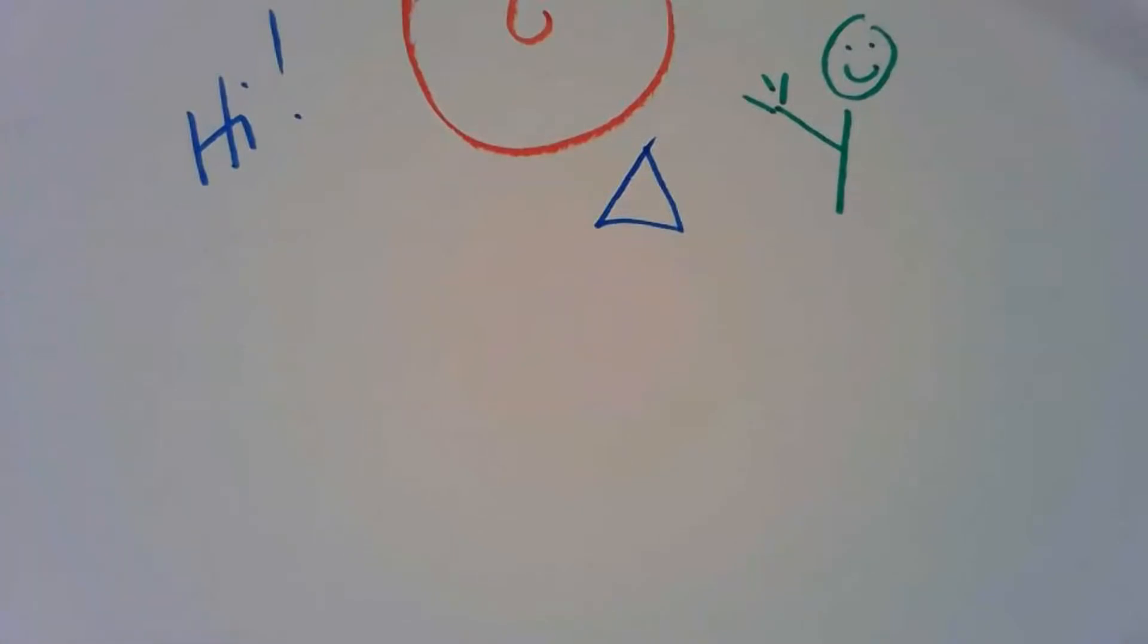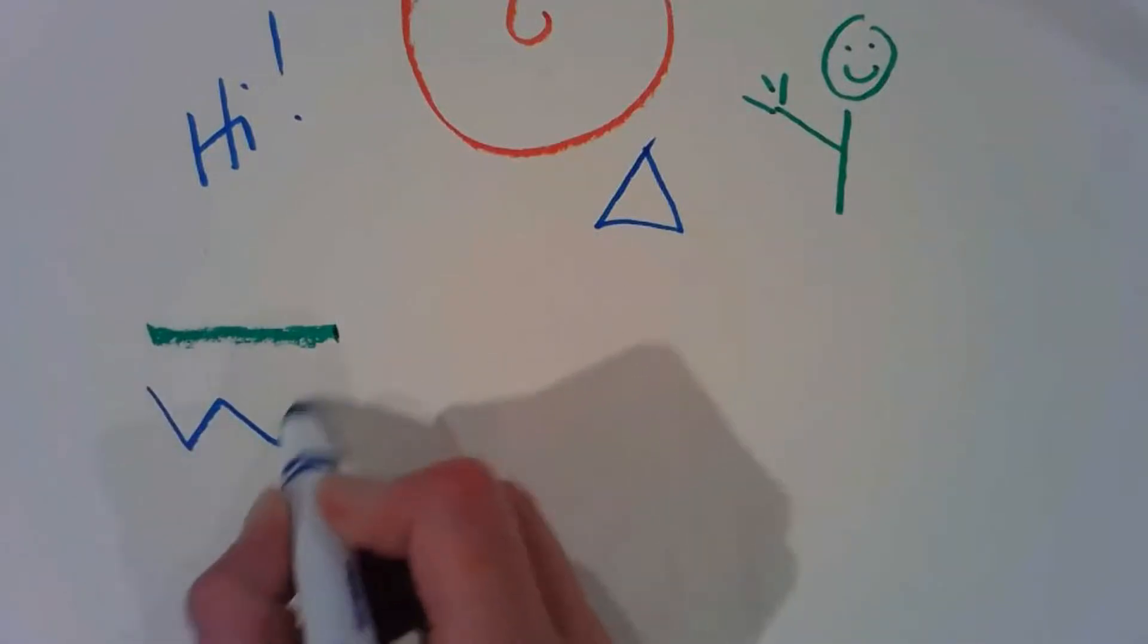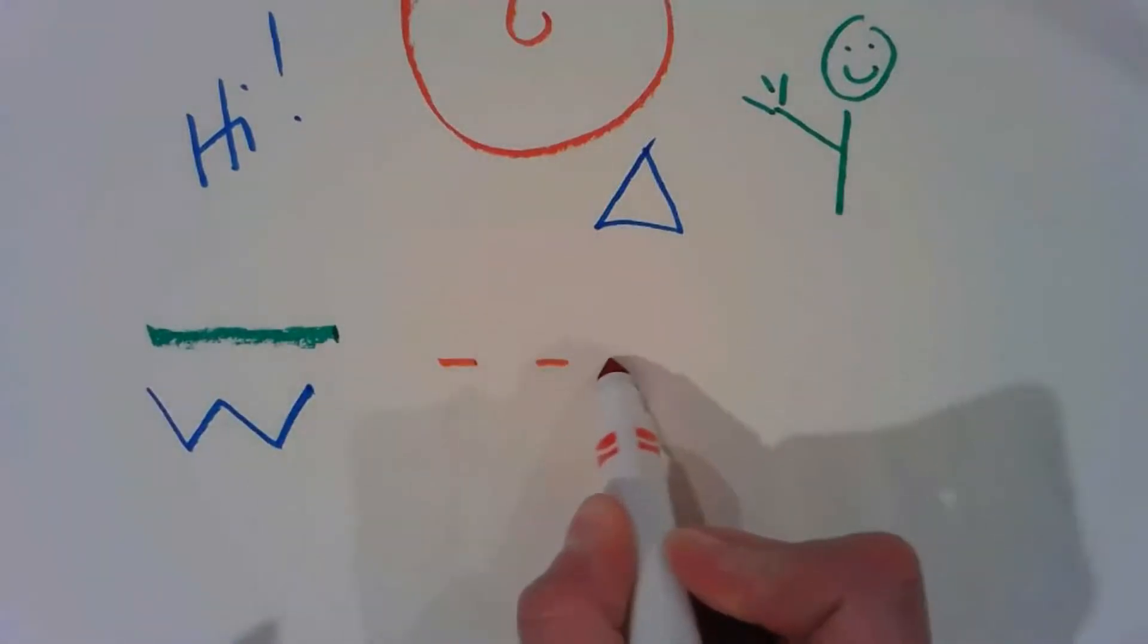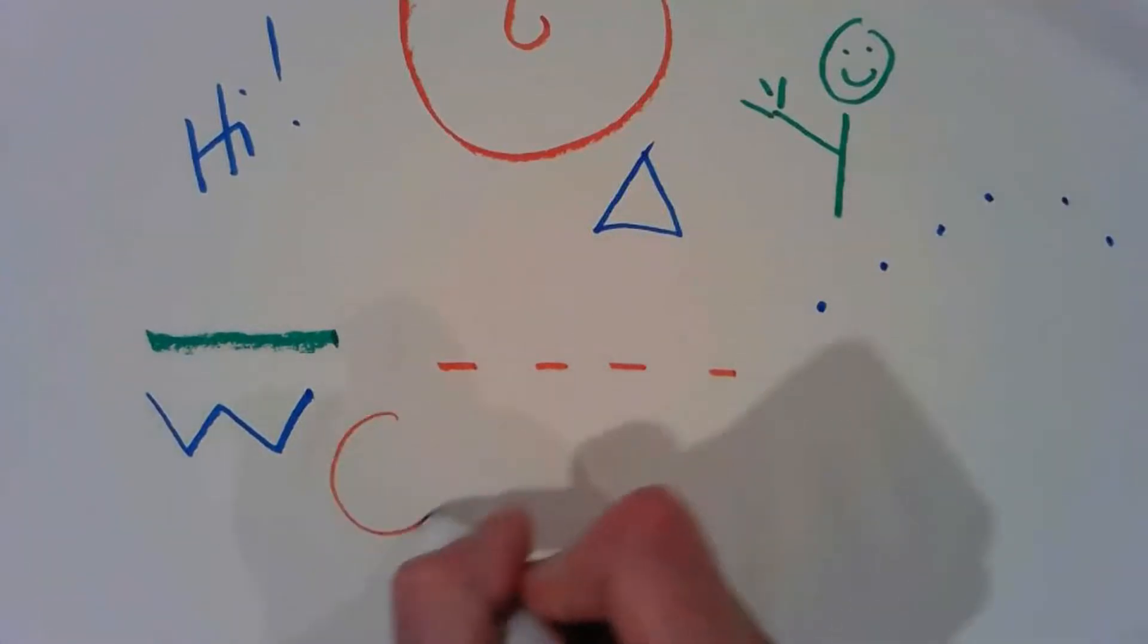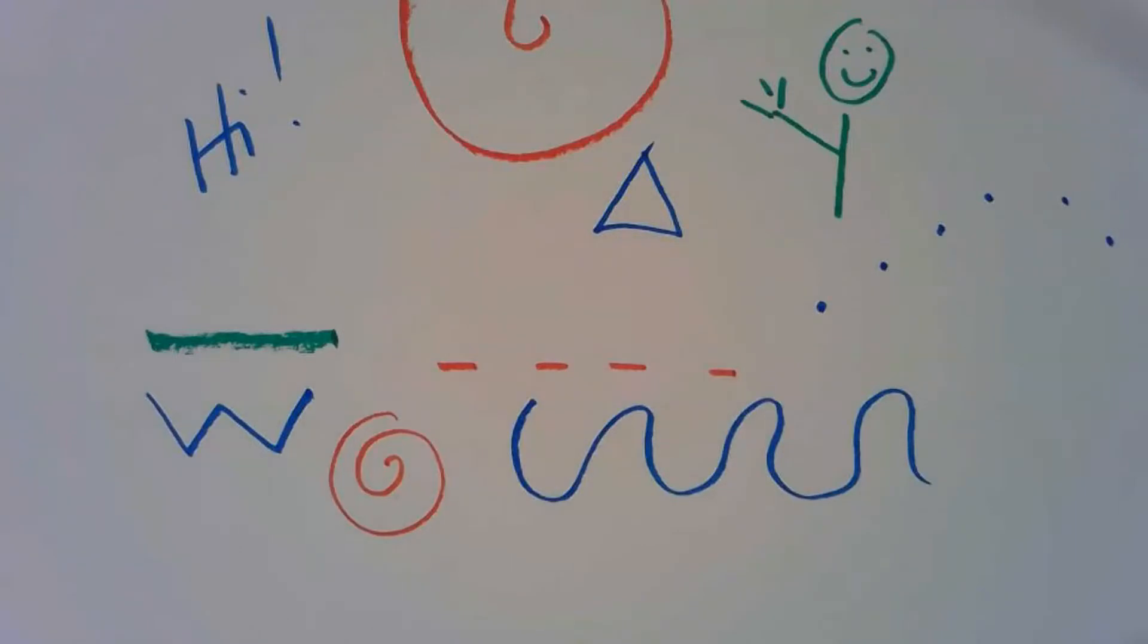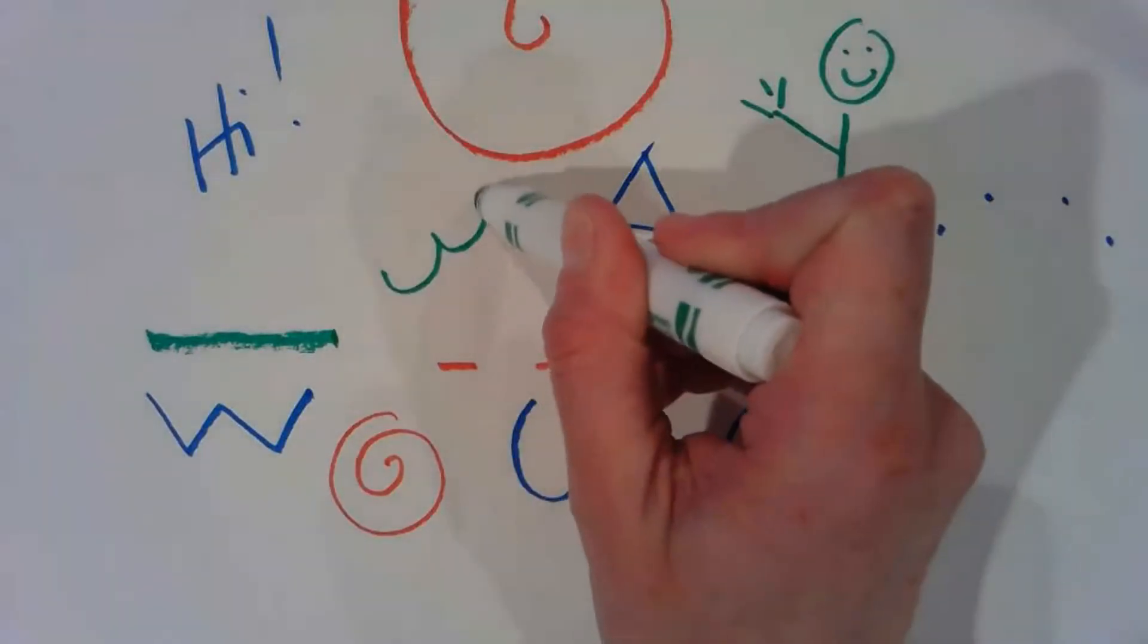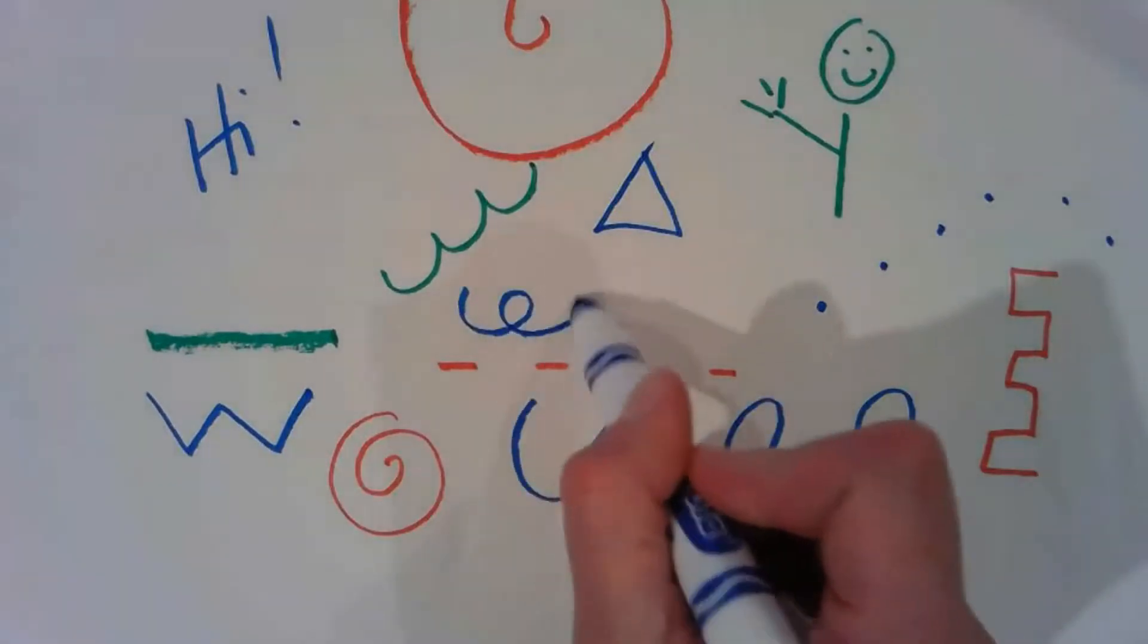There are many different types of lines that we can use. We can do straight lines, we can do zigzag lines, we can make dashes, dotted lines, spirals, curvy lines, wavy lines, boxy lines, and loopy lines.